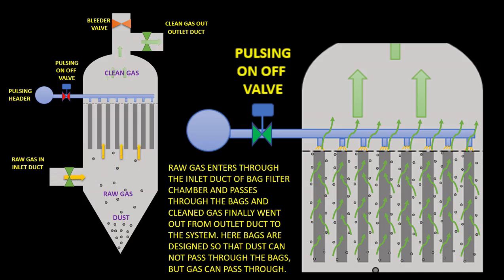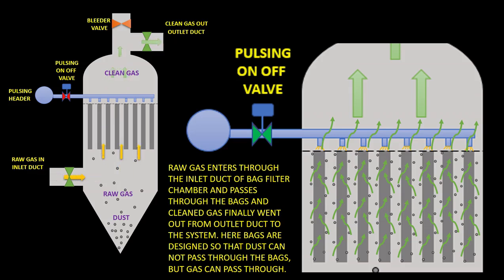Raw gas enters through the inlet duct of the bag filter chamber and passes through the bags. Cleaned gas finally exits from the outlet duct to the system. The bags are designed so that dust cannot pass through them but gas can pass through.